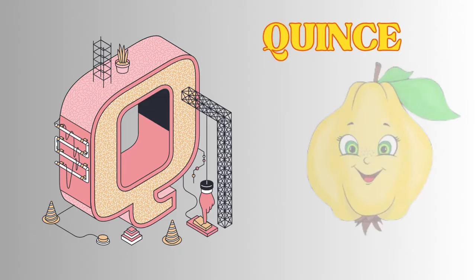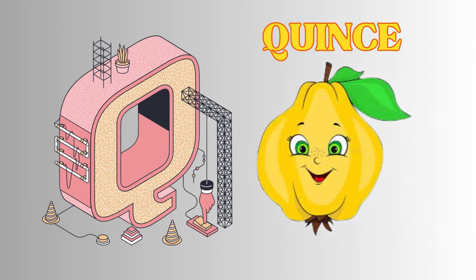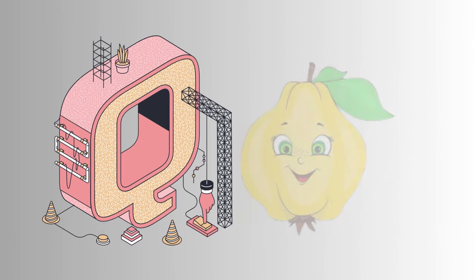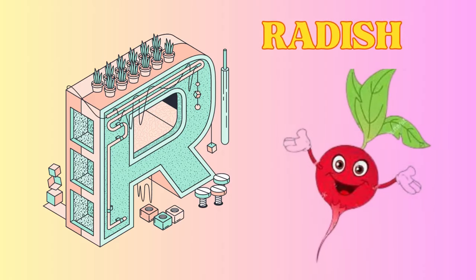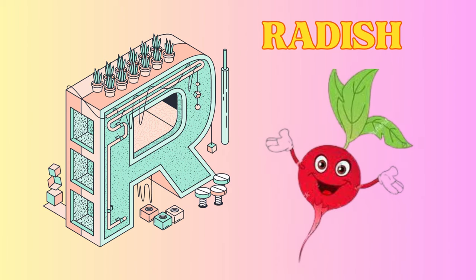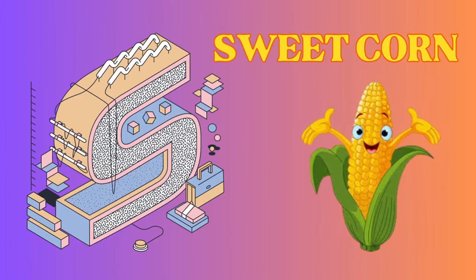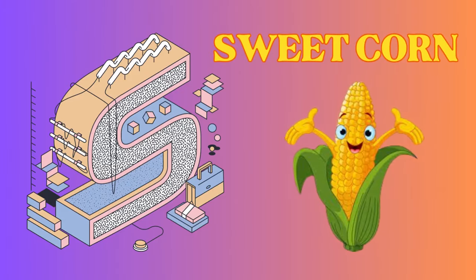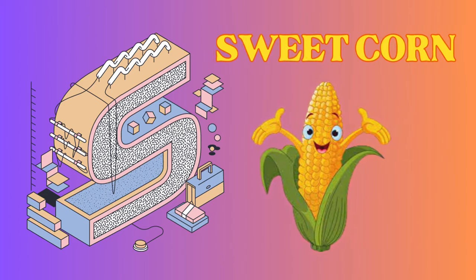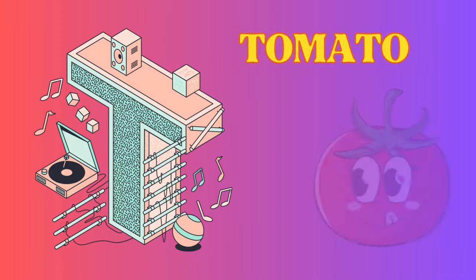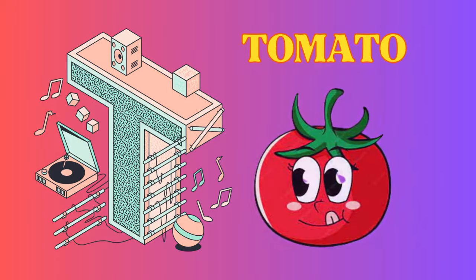Q is for quince, quince. R is for radish, radish. S is for sweet corn, sweet corn. T is for tomato, tomato.